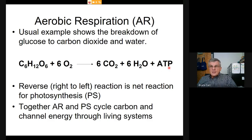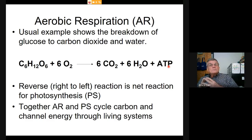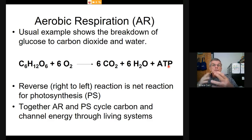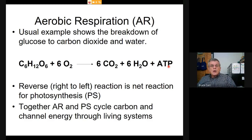You get 36 ATP from the entire process. Sometimes intermediate products are shunted out of the energy production system and used as building blocks. This process is called aerobic respiration—respiration because it uses oxygen—and at the cellular level is also called cellular respiration.